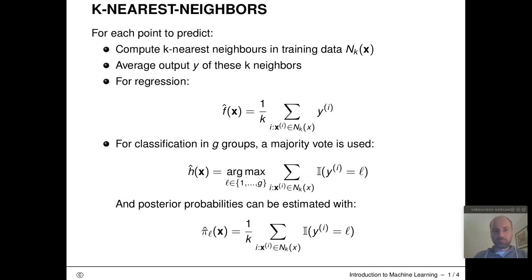So how does KNN again work? What was the general principle behind k-nearest-neighbors? For each point to predict at test time in our test data, we compute the k-nearest-neighbors in our training data and we put them in a set. So nk of x is the set of the k-nearest-neighbors for this guy x.